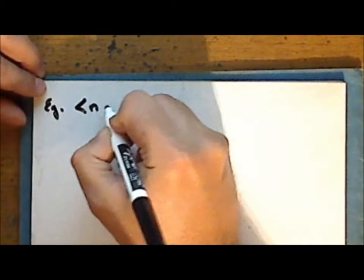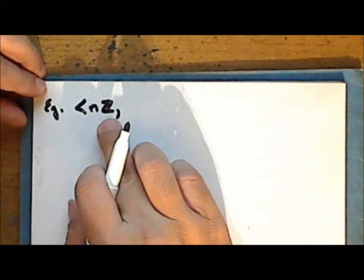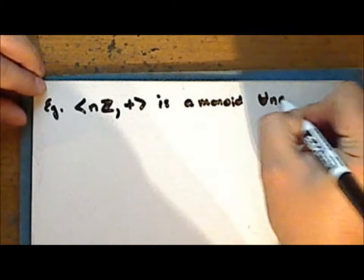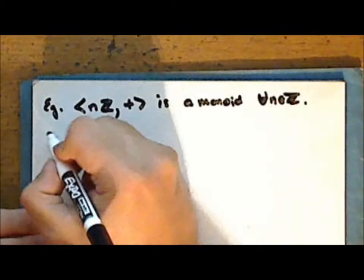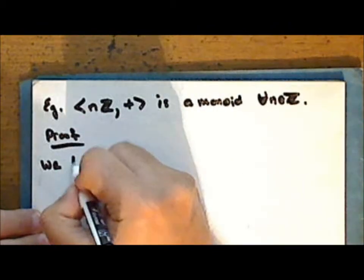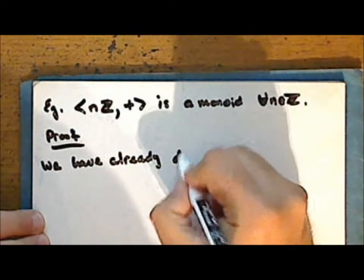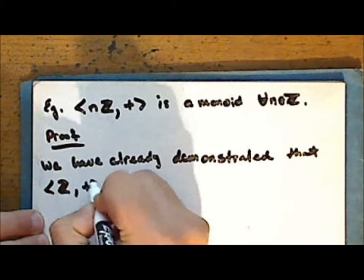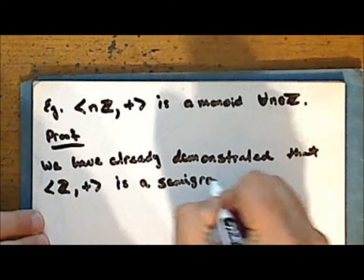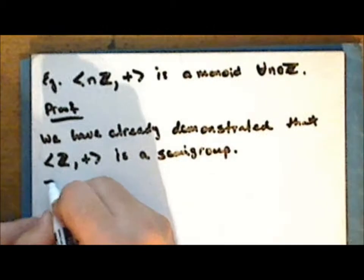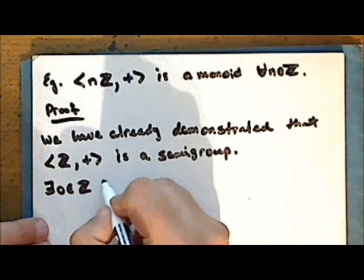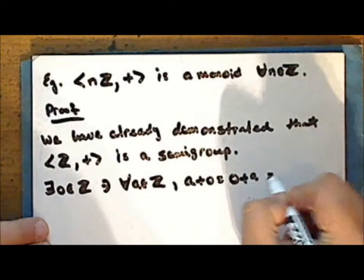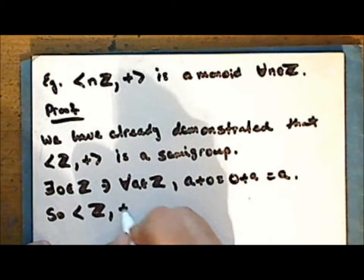We will show that the set nℤ — that is, the set of all integer multiples of a given integer n — with addition is a monoid. Proof: We have already demonstrated that the set of integers with addition is a semigroup. There exists 0 in ℤ such that for every integer a, a + 0 equals 0 + a equals a, and so ℤ with addition is a monoid.